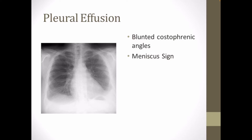On posterior-anterior or anterior-posterior chest x-ray, erect films are insensitive to small amounts of fluid. Features include blunting of the costophrenic angle, blunting of the cardiophrenic angle, and fluid within the horizontal or oblique fissures.